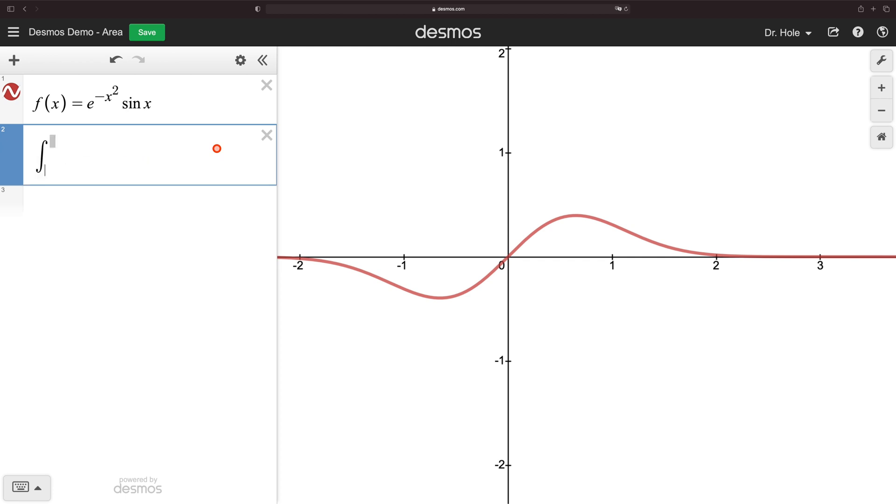And then the definite integral. Let's have a lower bound a and an upper bound b with our integrand f of x, differential dx. So Desmos knows what f is, but it doesn't know what a and b are. We turn those into sliders.